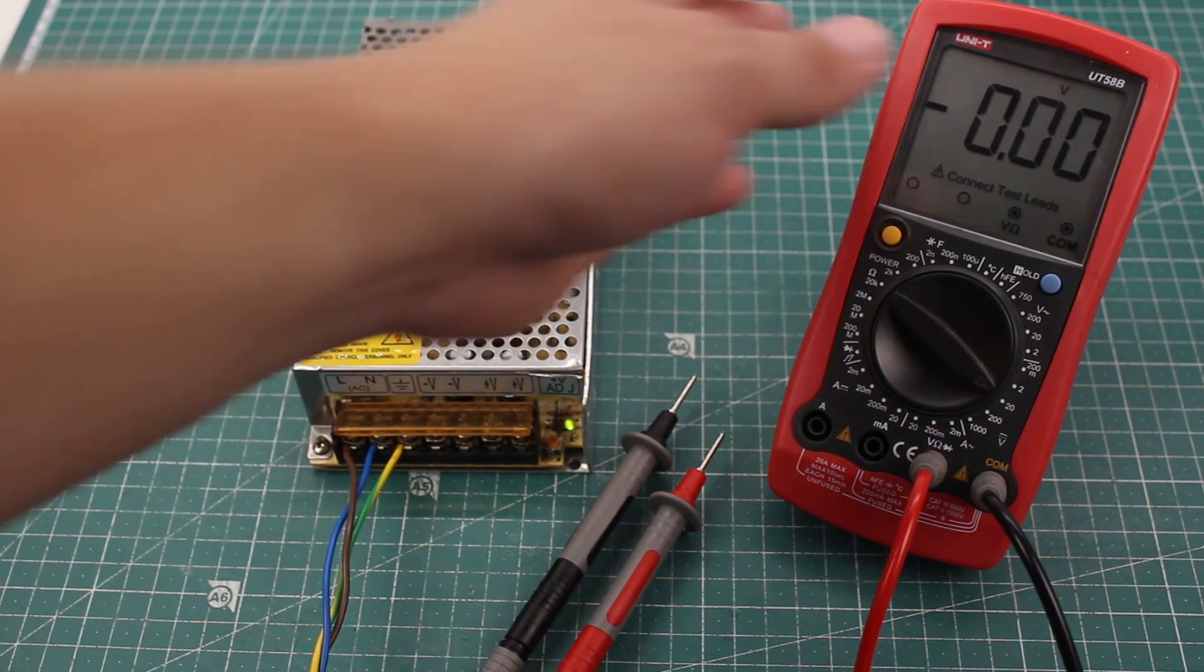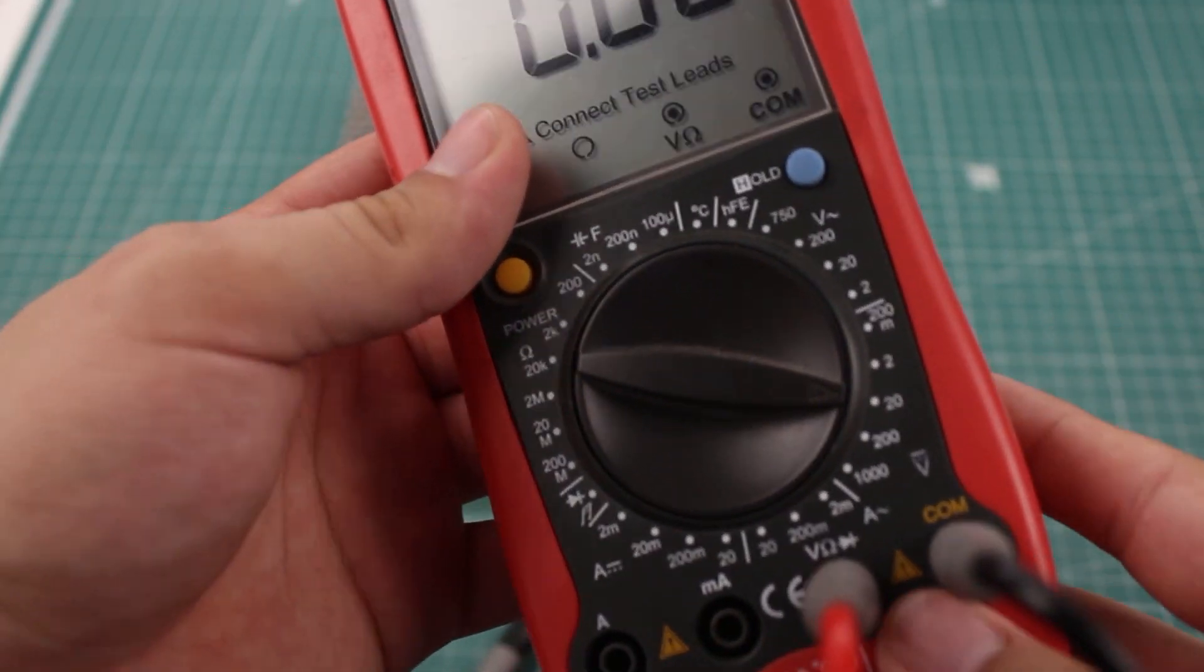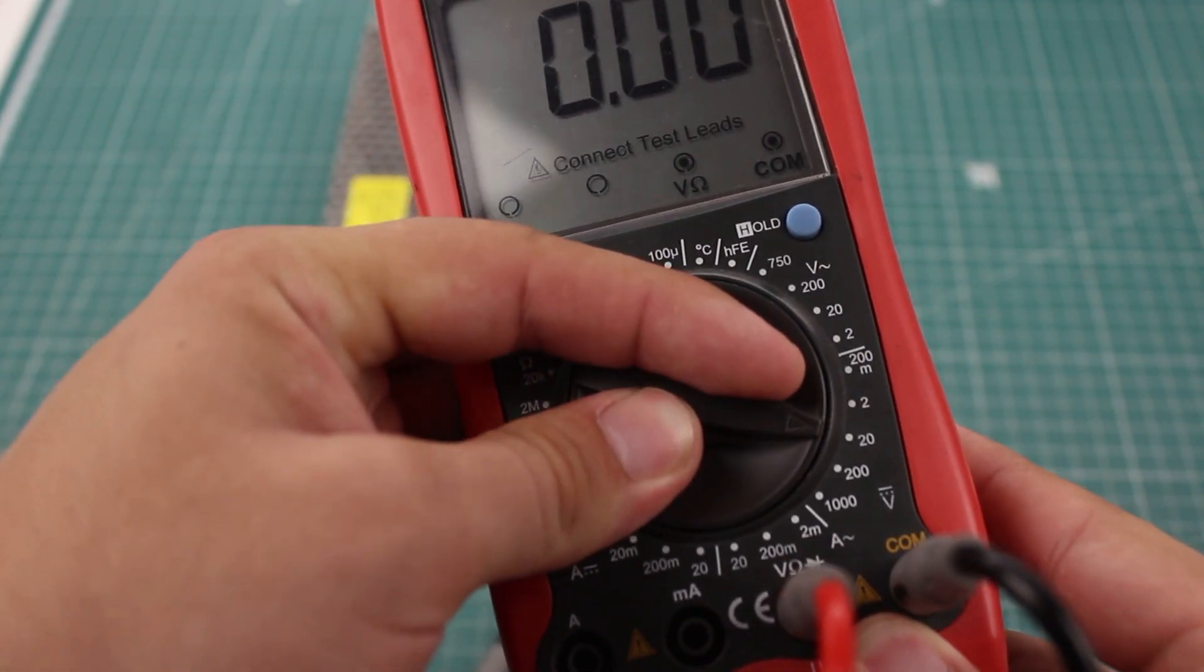Now, let's measure this 24V power supply. Since 24V is larger than the currently selected 20V range, I'll move it up to the 200V one.